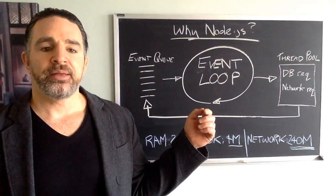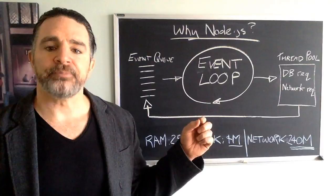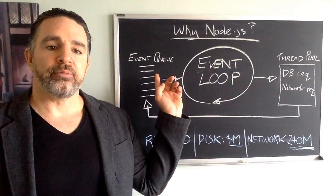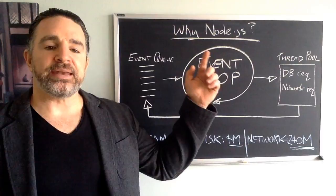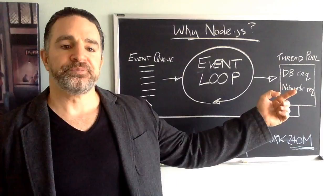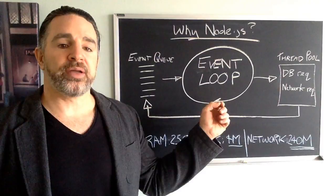Node is known as non-blocking, and non-blocking is a key thing. In this model, we have requests going into the event queue, and then the event loop is picking up these different requests and passing them off to the thread pool to action. That's the non-blocking nature of it.